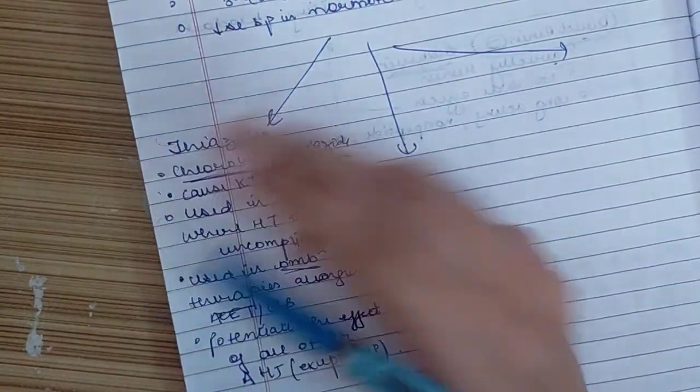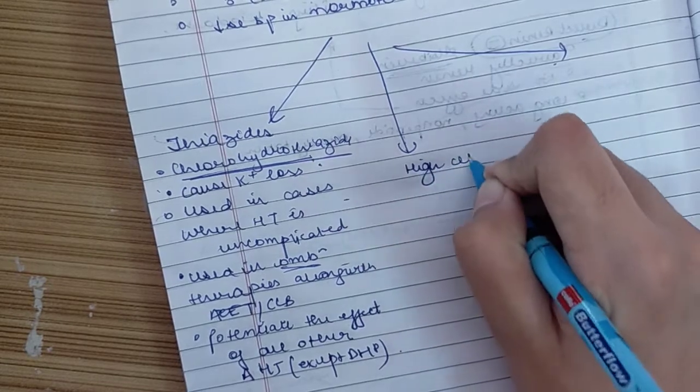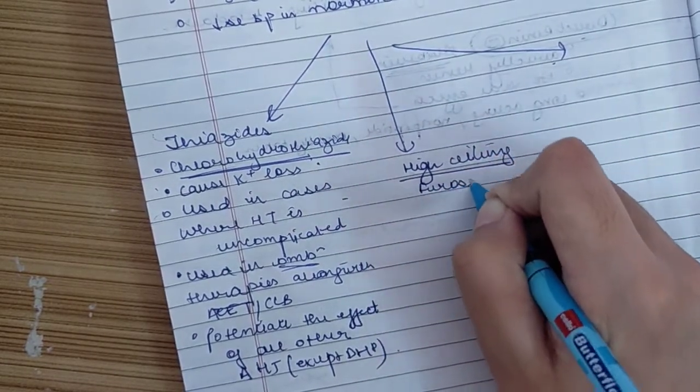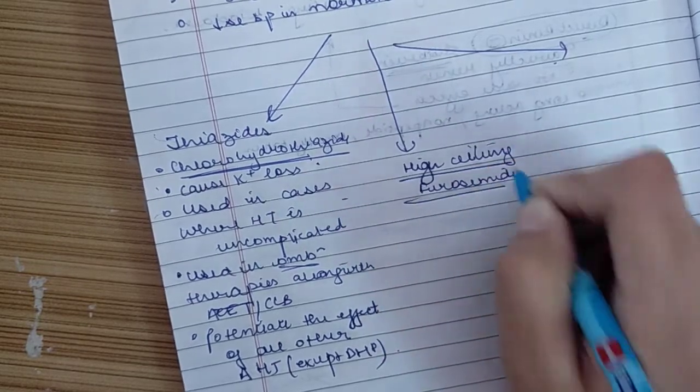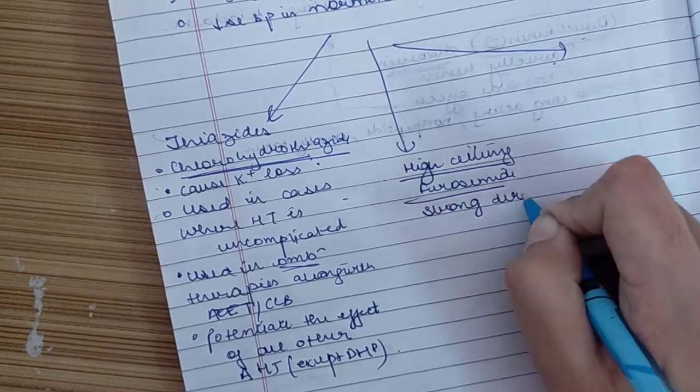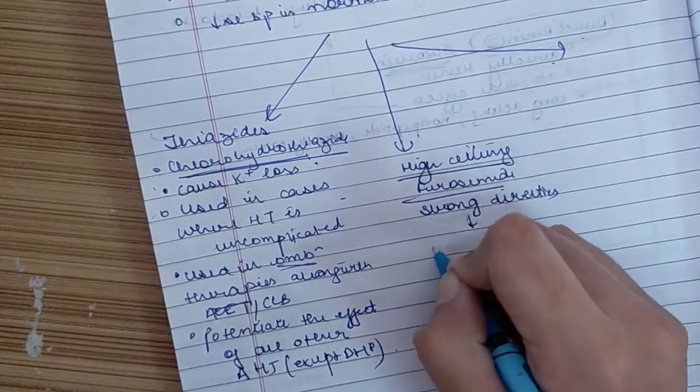After thiazides, what do we have? High ceiling diuretics. In high ceiling diuretics we have furosemide. What we see is these high ceiling diuretics are very strong diuretics, but they are weak antihypertensives.